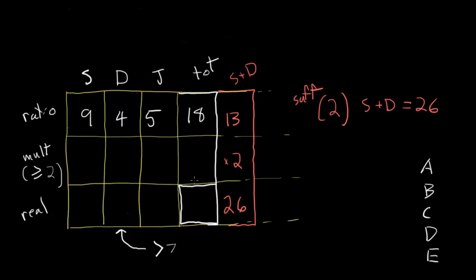And that's enough to find our multiplier. To get from 13 to 26, we multiply by 2. So to get our total, we multiply 18 by 2 and find that there are 36 total articles. So we know statement number 2 is sufficient, and that gets rid of answer choices A, C, and E.